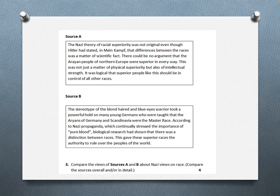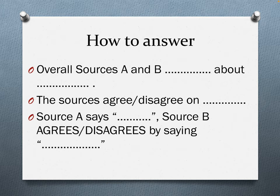Here's an example of a compare the sources question. As you can see, we've got two sources and then a question at the bottom that says compare the views of sources A and B about Nazi views on race. So both of these sources are talking about the Nazi views of race, and what we need to do is decide if the sources agree or disagree. Once we've made that decision, we follow this structure: overall, sources A and B agree or disagree about whatever the question is asking. Source A says, and then source B agrees or disagrees by saying the same.